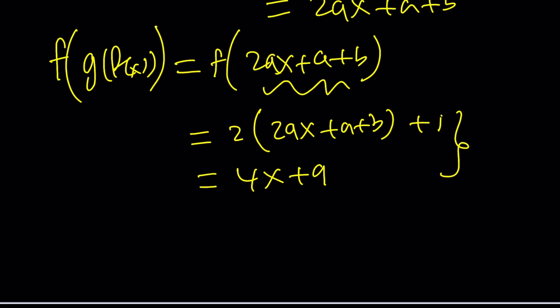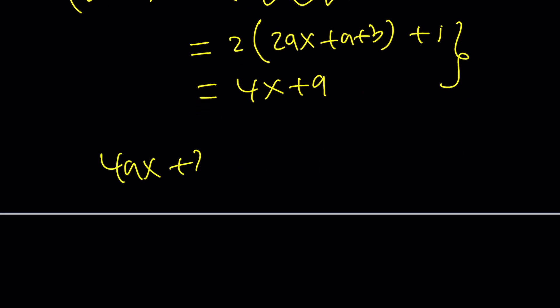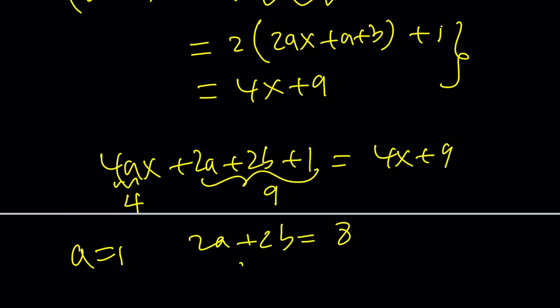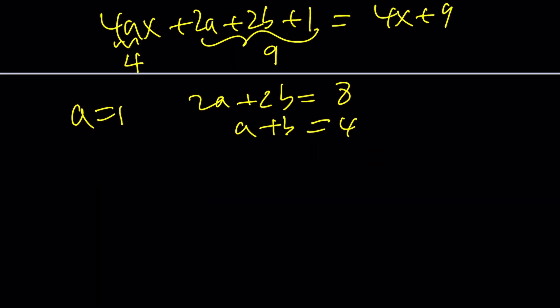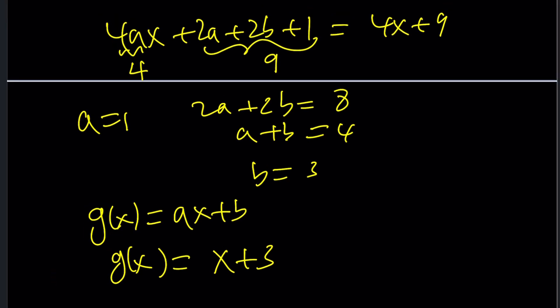So let's go ahead and solve this equation. 4ax + 2a + 2b, or not 2b, yay, plus 1 equals 4x + 9. From here, we can subtract 1 from both sides or totally go off of this. The coefficient of x needs to be 4. That means a is equal to 1. And this needs to be 9. 2a + 2b = 8. a + b = 4. And since a is 1, b is 3. And since g(x) was ax + b, g(x) should be x + 3.